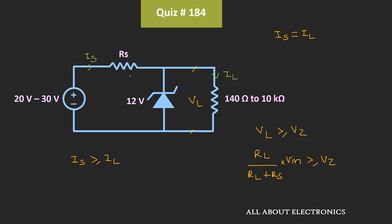For finding the value of Rs, we consider the minimum value of load resistance. When load resistance is minimum, maximum current flows through the load resistor. When RL equals 140 ohm, the load current Il equals 12V divided by 140 ohm, which is 3/35 A. On the other hand, when RL equals 10 kilo ohm, the load current is only 1.2 mA. The Zener regulator circuit should be able to supply the current in the worst case, so we consider the minimum load.